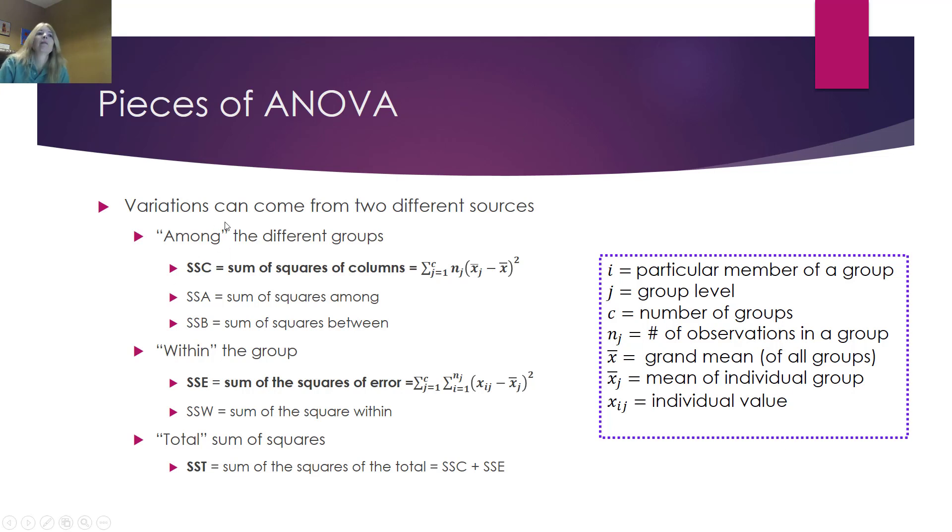We're looking at the variation from different sources. One of the variation would be among the different groups, the different classes. I'm going to go with the textbook. So the SSC, sum of the squares of the columns. So in other words, each column might be a classroom. And so I'm looking to see between each column, is there a lot of variation going on? A lot of times this is called sum of the squares of among, which you will actually see. That's what it shows in Excel, or the sum of squares between each one of these.